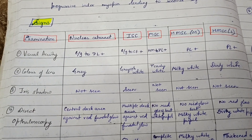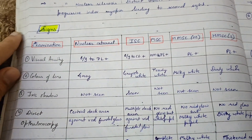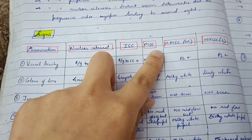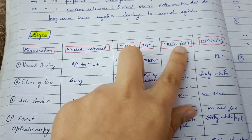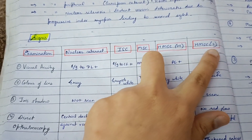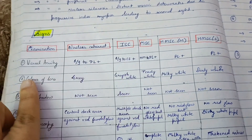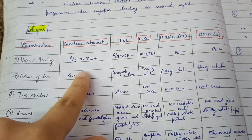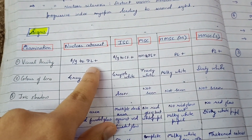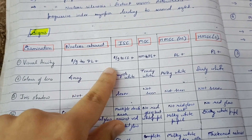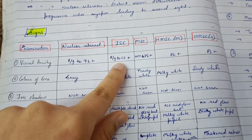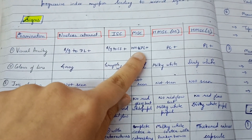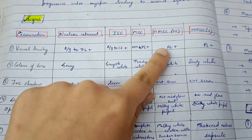Regarding signs of cataract — categorized as nuclear, immature, mature, hypermature morgagnian, and hypermature sclerotic. For visual acuity: in nuclear cataract, visual acuity ranges from 6/9 to perception of light. In immature cataract, 6/9 to counting fingers. In mature cataract, hand movement to perception of light. In both morgagnian and sclerotic hypermature, only perception of light is seen.